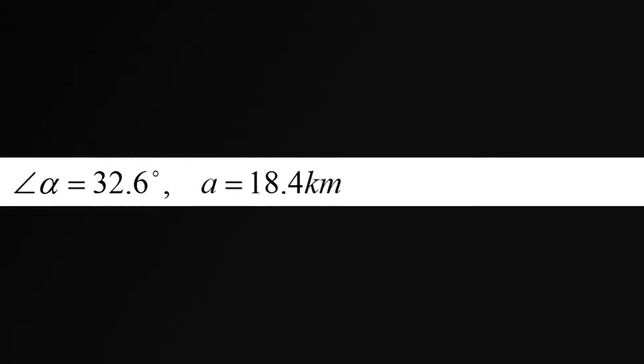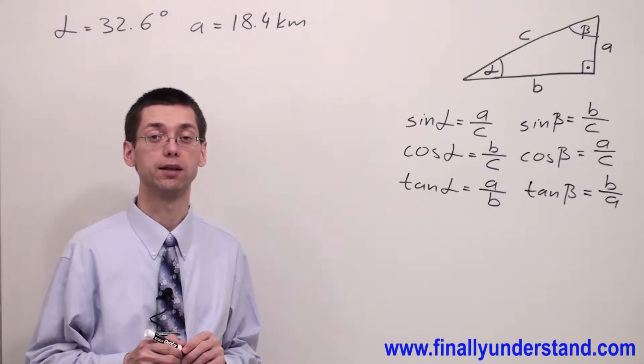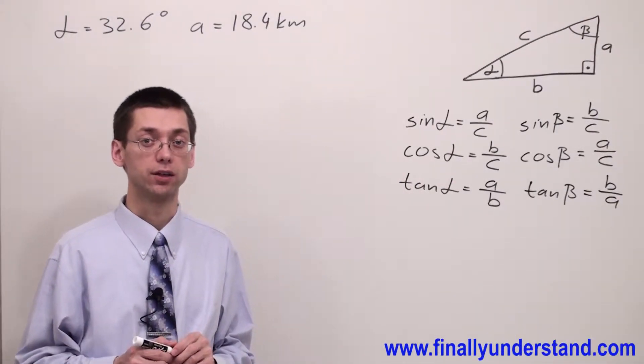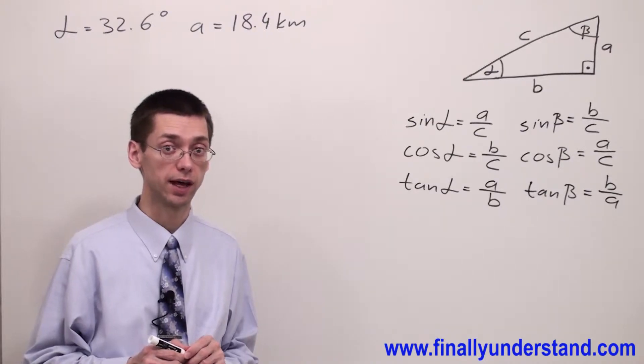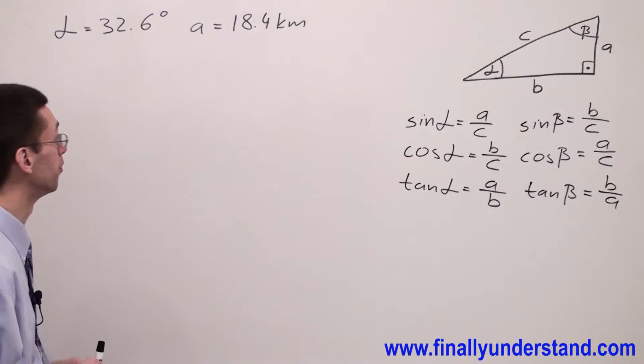We have another example on the board. This time, angle alpha is given and length of side A. We're supposed to find the length of side C and side B and angle beta.